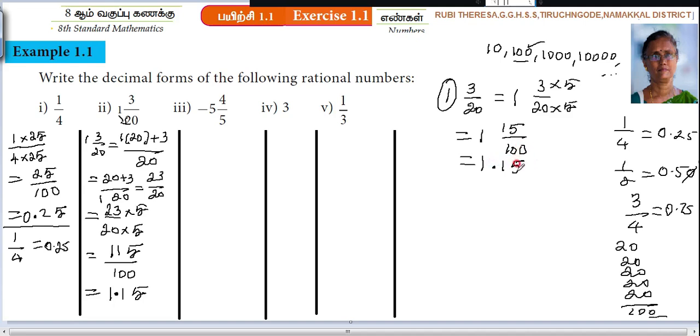That means what? 1. 15 by 100 means 0.15. Because 2 zeros are there. So, 1, 2. So, this is the answer. This is the another way of doing it. Alternate method. Second sum. Next one.